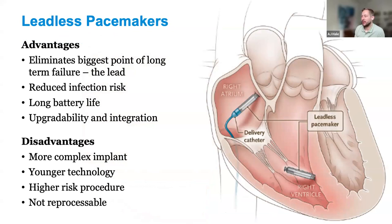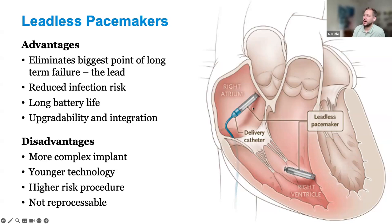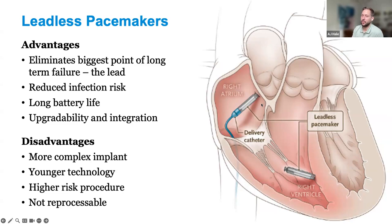We also have leadless pacemakers. Medtronic was first to come to market with the Micra. The one displayed here is the Abbott St. Jude dual chamber system. The original systems were VVI only — pacing in the ventricle only. Newer iterations allow for atrial pacing. Abbott is the first to come to market with dual chamber, but other companies are coming down the pike as well.